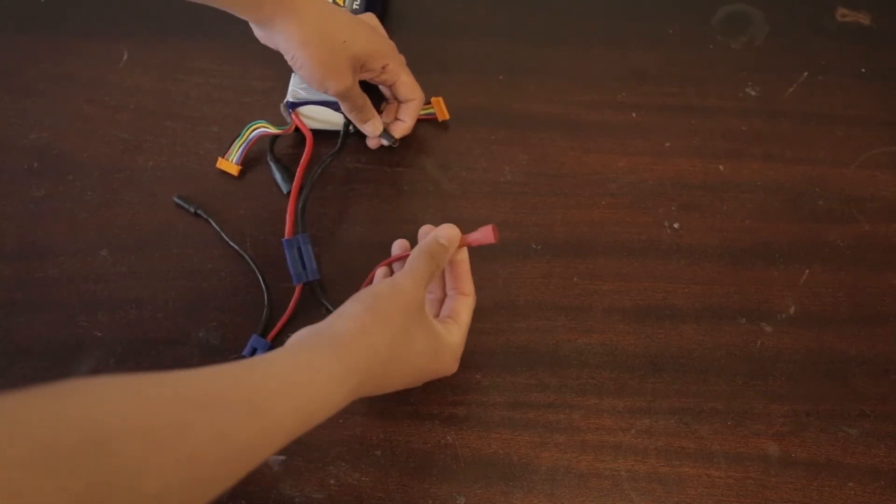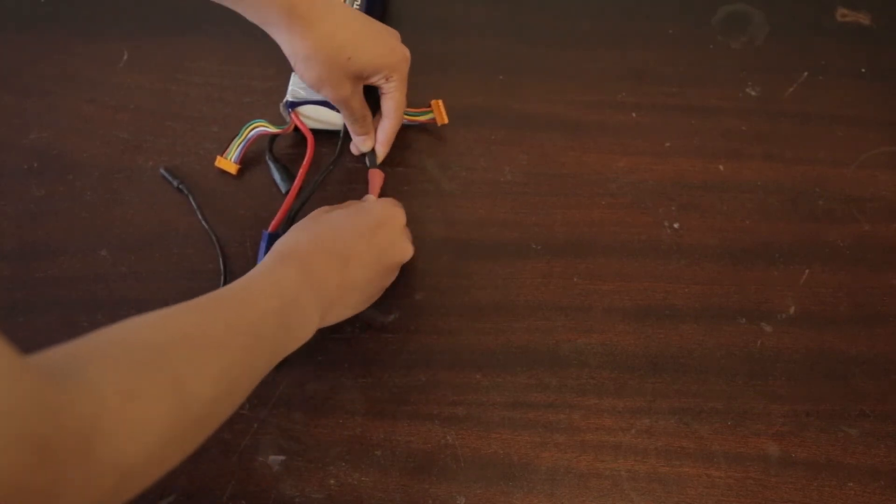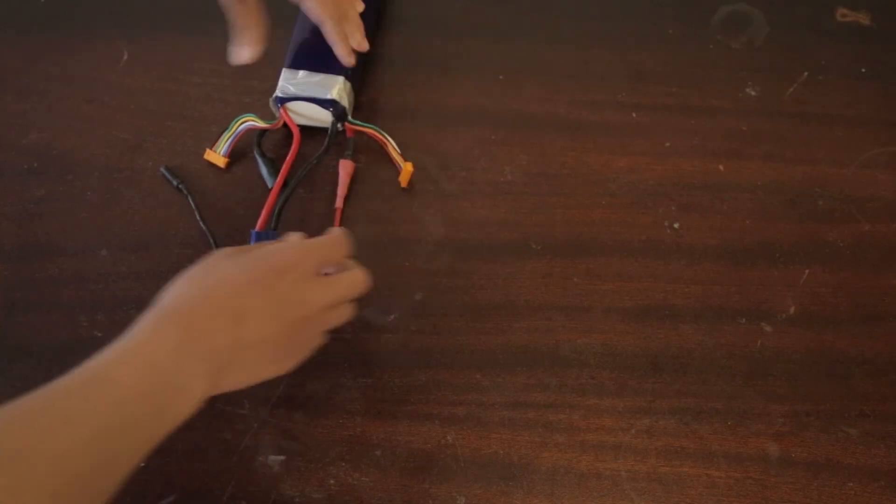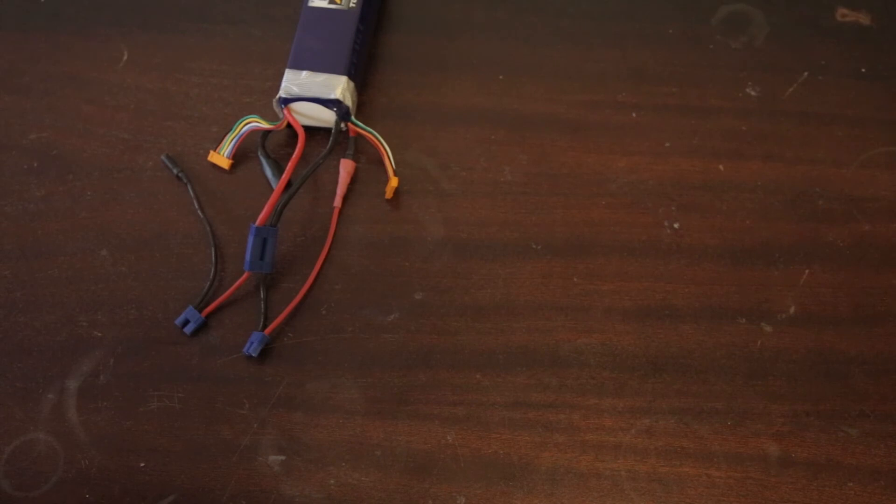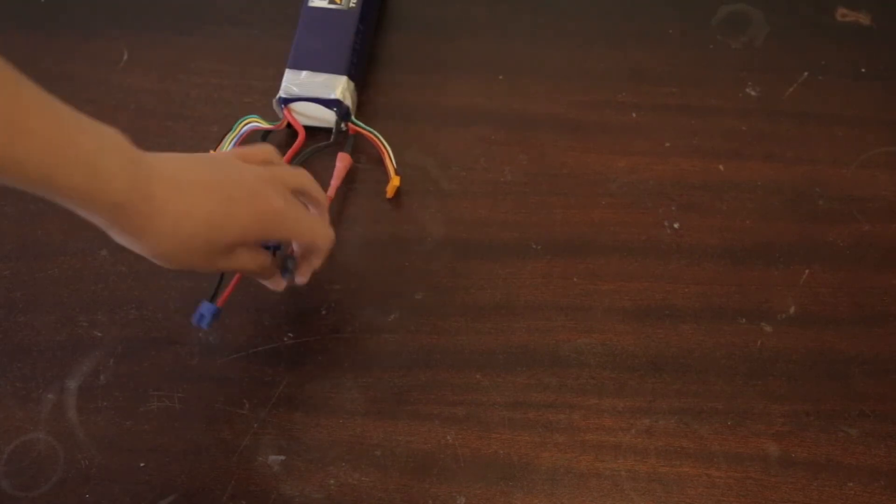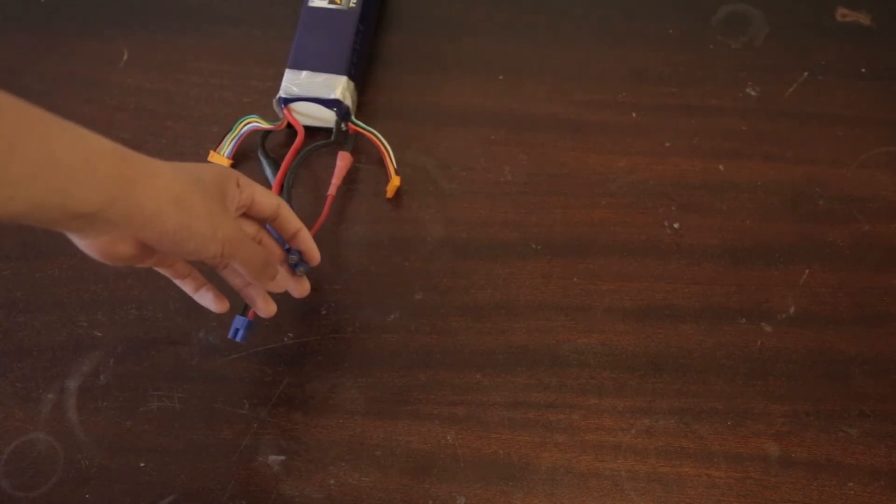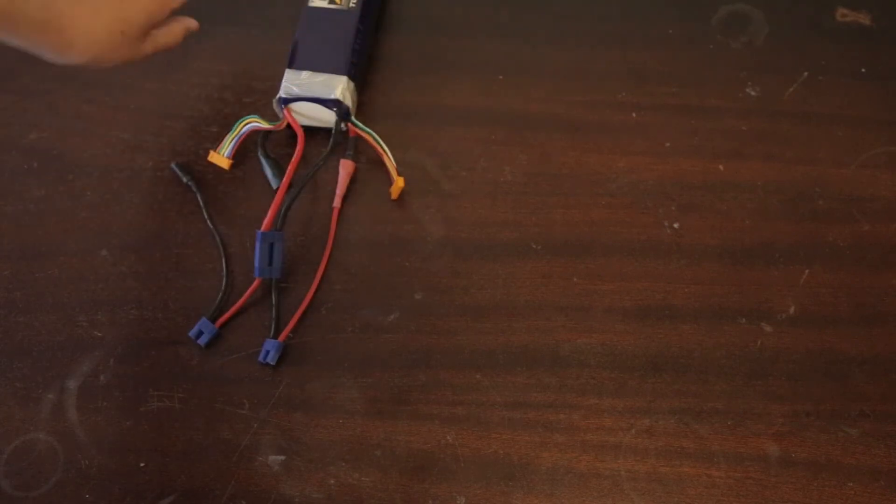And then the red one goes to the positive on this side. So this half of the battery, which is the back half, can now be charged as a 6S with an EC3 on it and a balance connector.